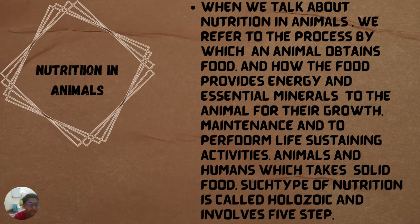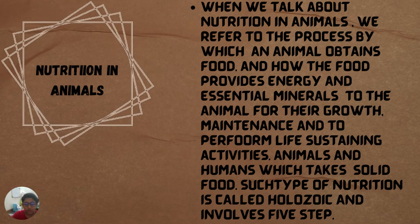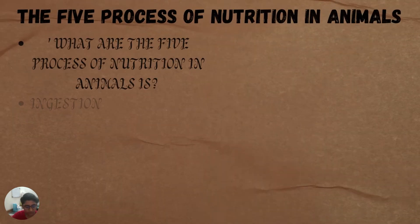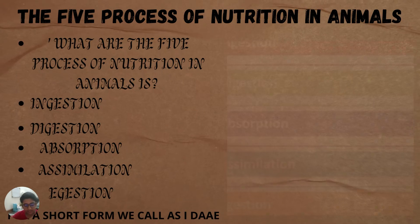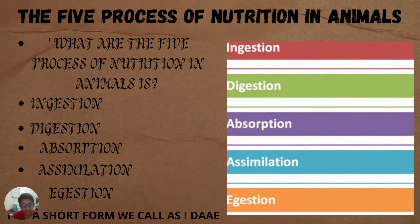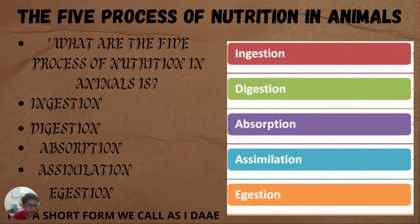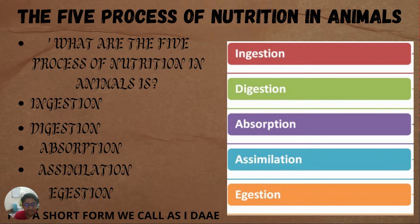For animals and humans which take solid food, this type of nutrition is called holozoic, and it involves five steps. The five-step process of nutrition in animals — what are the five steps? They are ingestion, digestion, absorption, assimilation, and egestion — shortened as IDAE.